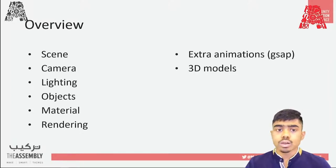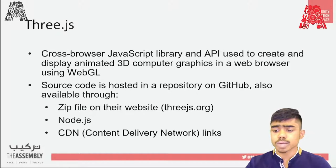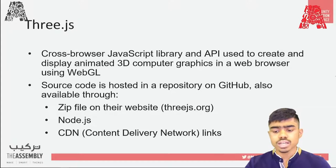Let me give you an overview of this workshop. Today we will go through scenes, cameras, lighting, objects, and material — all rendered through the browser. After this, I will show you how to incorporate more animations with GSAP. Finally, we will end the workshop by teaching you how to import 3D models into the browser. Three.js is a cross-browser JavaScript library and API used to create and display animated 3D computer graphics in a web browser using WebGL. The source code can be accessed through GitHub, Node.js, CDN, or downloaded from threejs.org.